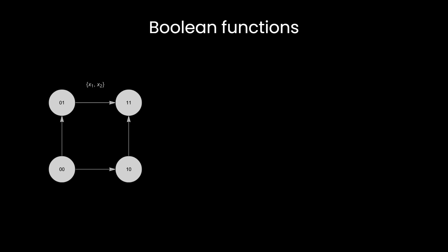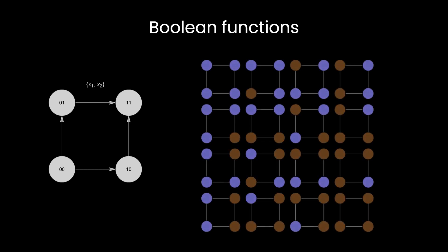In two dimensions, it can be represented as a square graph where the node labels denote values of the input variables x1 and x2, which can be all combinations of zeros and ones. Each node is colored in blue if its output is zero, or in brown if its output is one. Shown here are all possible two-dimensional boolean functions.